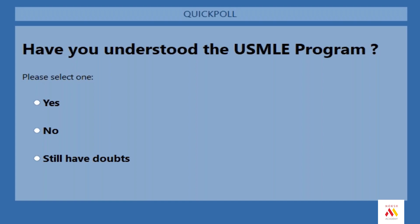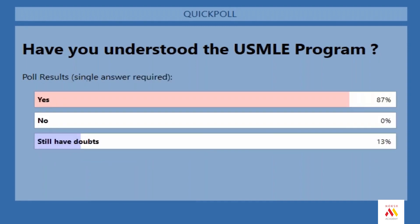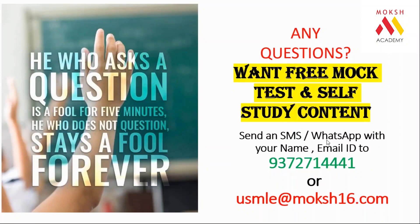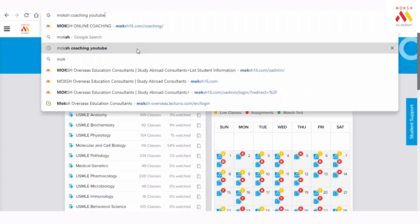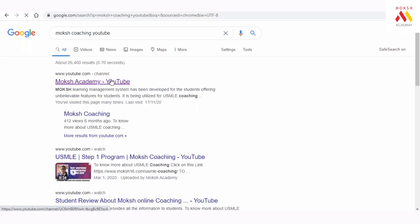It depends on you — minimum, Step 1 takes one year of preparation, but we don't allow you to sit the examination until you're hitting 240 in our mock tests. The total expenditure is between 15 to 20 lakh rupees. Regarding LOR from American doctors — you get those when you go for clinical rotations. For detailed information about clinical rotations, I'd direct you to the Moksha Academy YouTube channel where there's a dedicated one-and-a-half-hour video. The sooner you start, the better.